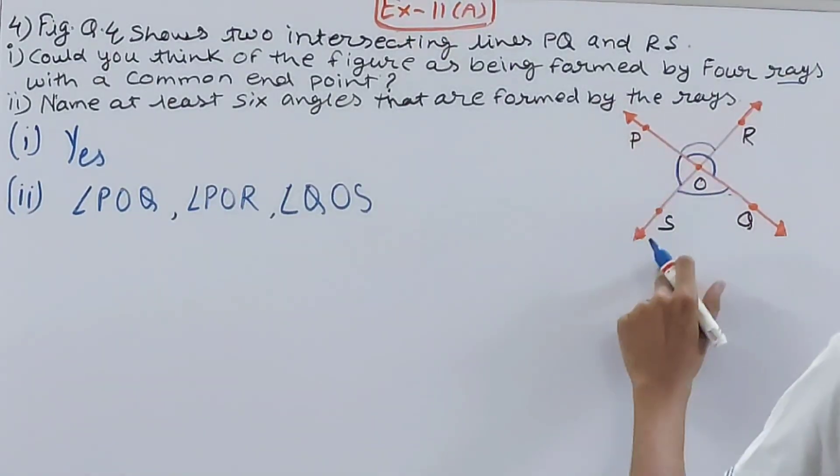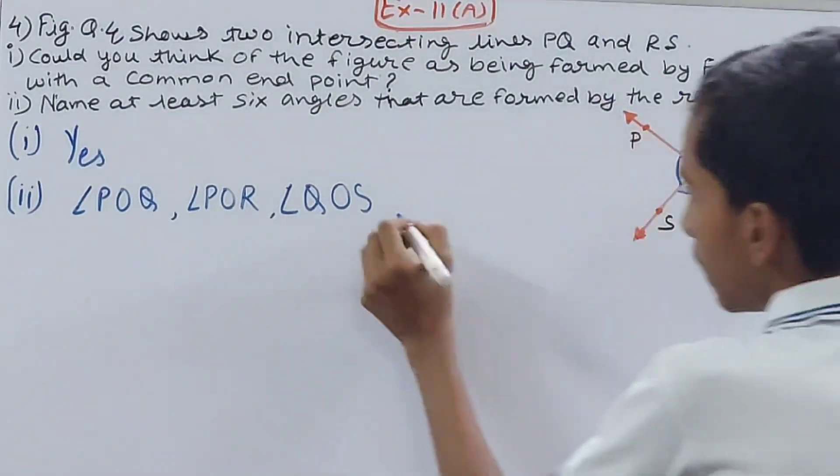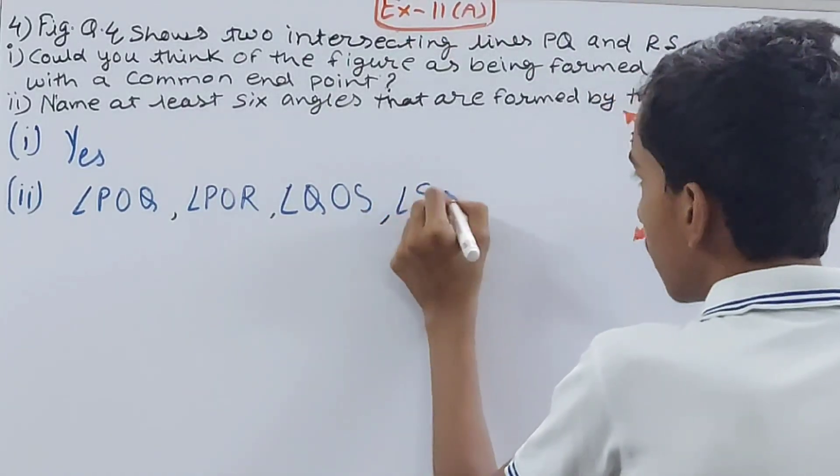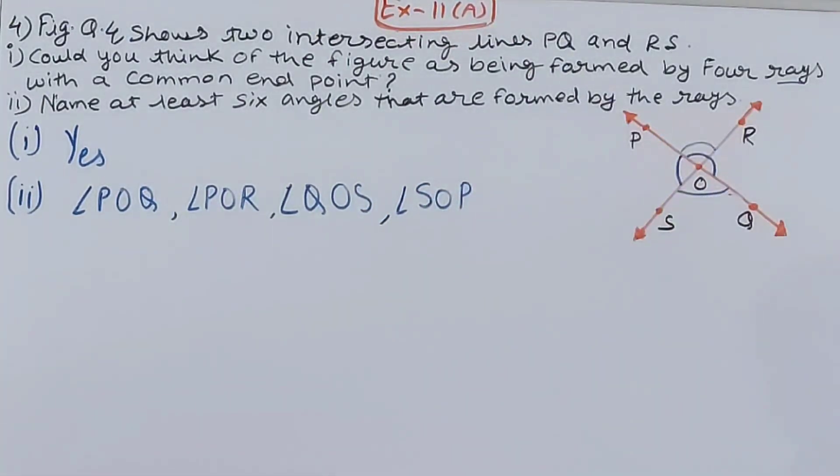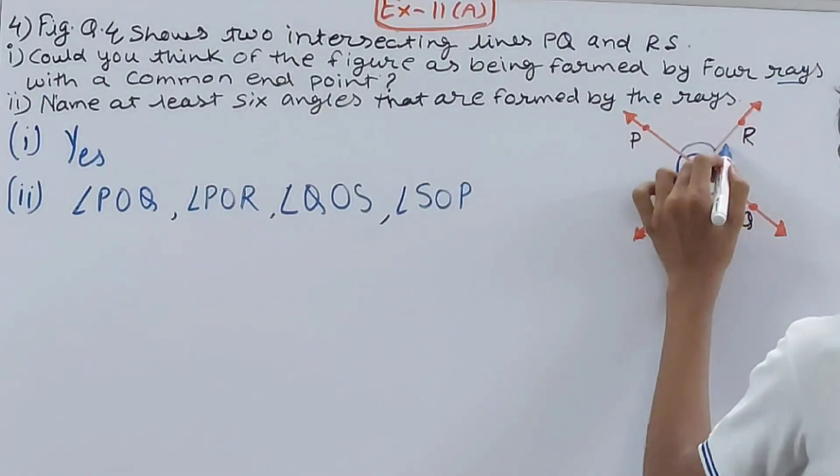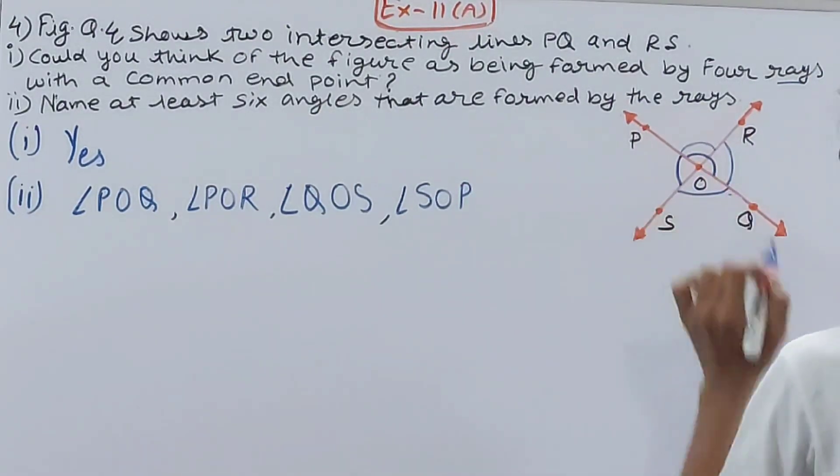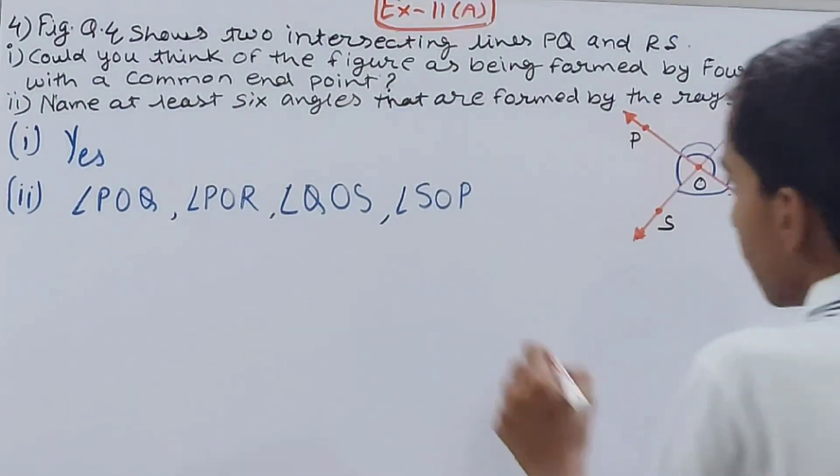And then my other angle that is there will be angle SOP, this one. So angle SOP, four done. Next one I will be angle ROQ.